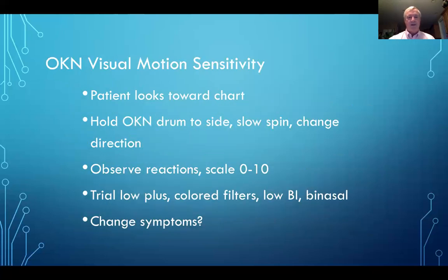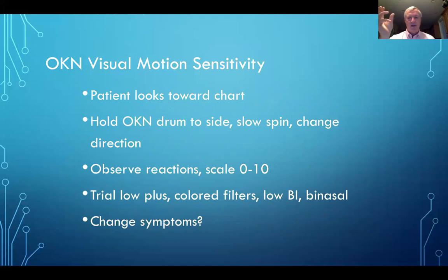For OKN visual motion sensitivity, the patient looks toward the eye chart and the OKN drum is off to the side spinning. We want to go as slow as possible — if you go fast, it's going to blur and you won't pick up any motion to the side. It's a very slow rotation, as slow as you can go, and we also change rotational direction. Observe whether the patient is sensitive to that, scale from zero to ten, and trial low plus, colored filters, low base-in, or binasal occlusion.